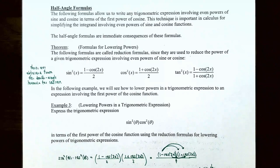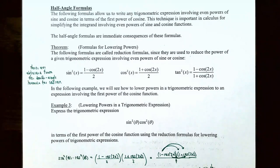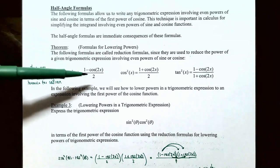The following formulas allow us to write any trigonometric expression involving even powers of the sine and cosine function in terms of the first power of cosine. This technique is really important in calculus for simplifying the integrands involving even powers of the sine and cosine functions. The theorem states formulas for lowering powers of trigonometric functions. Sine squared of x is equal to (1 − cos(2x)) / 2.